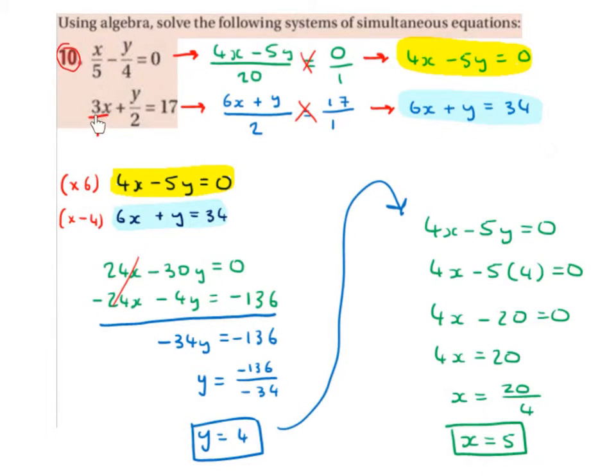I'm going to make 3x be 3x over 1, so I've got two fractions that I can add together. I've got 1 and 2, so my common denominator is 2. 1 into 2 goes twice, and 2 multiplied by 3x is 6x. 2 into 2 goes once, 1 multiplied by y is just y. This equals 17 over 1, so I cross-multiply. 6x plus y by 1 is 6x plus y, and 2 multiplied by 17 is 34.